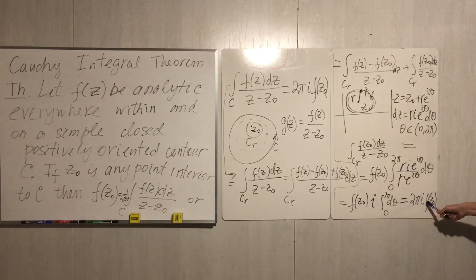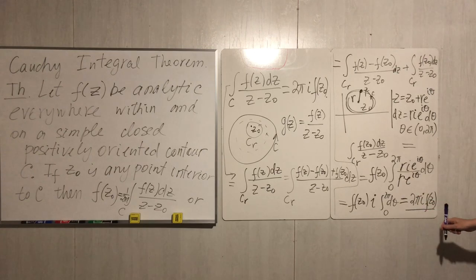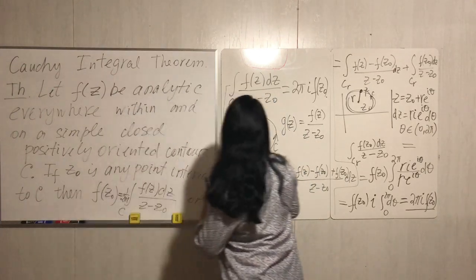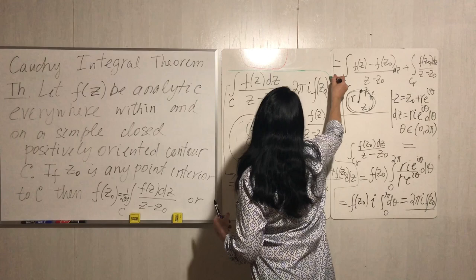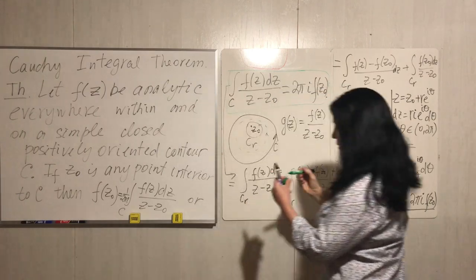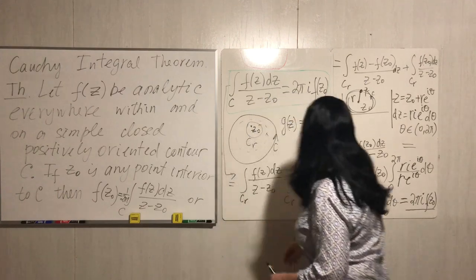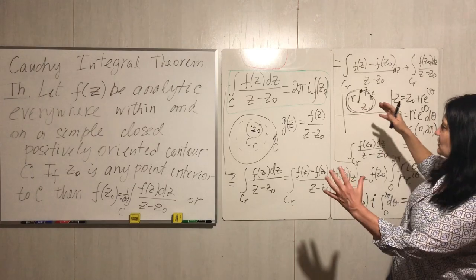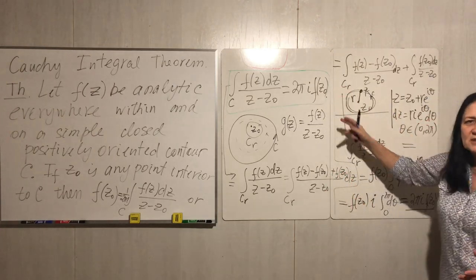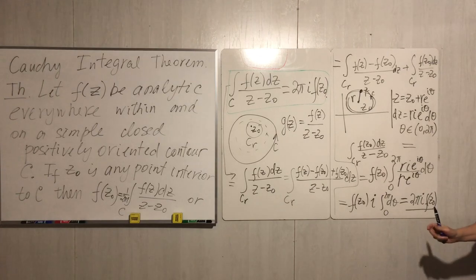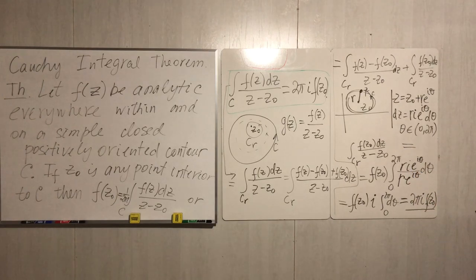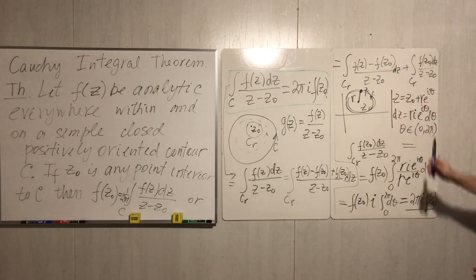We computed this integral and got 2πi·f(z₀), which is exactly what we wanted from the full integral. This tells us that the first integral must be zero. So let's show that the integral along c_r of [f(z) - f(z₀)] / (z - z₀) dz equals zero.